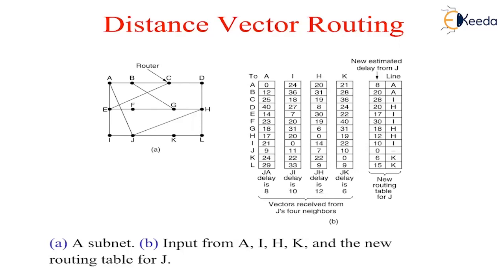In distance vector routing, each router contains a routing table indexed by and containing one entry for each router in the subnet. This entry contains two parts: the preferred outgoing line to use for the destination and an estimate of the distance to that destination. The metric used might be number of hops, time delay in milliseconds, total number of packets queued along the path, or something similar. The router is assumed to know the distance to each of its neighbors. If the metric is hops, the distance is just one hop. If the metric is queue length, the router simply examines each queue. If the metric is delay, the router can measure it directly with special echo packets that the receiver just timestamps and sends back to the source as fast as it can.